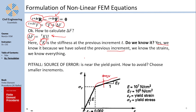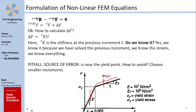Using the previous increment's stiffness to predict the next step is a source of error. Imagine you are at a displacement in the elastic region and jump to the next increment. Near the change in stiffness — the yield point — you are overestimating the stiffness, because during the delta step itself the stiffness has already changed.